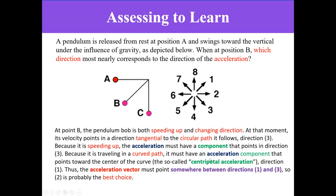I have here a summary for situations so that you can read and understand. So at point B, the pendulum bob is both speeding up and changing direction. At that moment, its velocity points in the direction tangential to the circular path it follows, which is direction three. Because it is speeding up, the velocity increases. The acceleration must have a component that points in direction three because the velocity is increasing its magnitude.